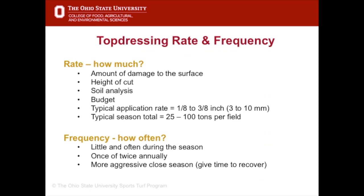Lastly, we'll look at rates and frequency of top dressing turf. The amount of top dressing applied will depend upon the amount of damage to the field surface, with more damage and bigger holes requiring more top dressing. The cutting height of the grass, the physical texture of the underlying soil, since adding material will change that, and the budget are all important factors. A typical application rate is one-eighth to three-eighths of an inch depending on those factors. Over an entire season, anywhere from 25 to 100 tonnes could be applied to the turf.